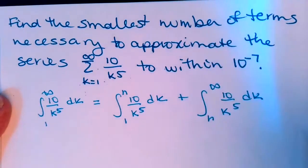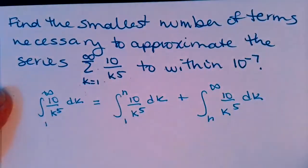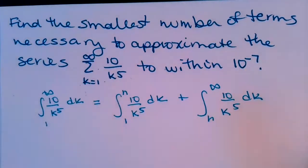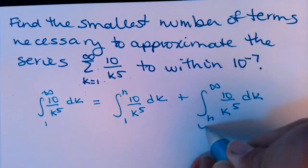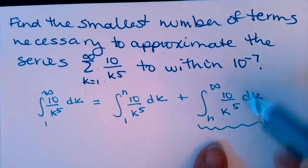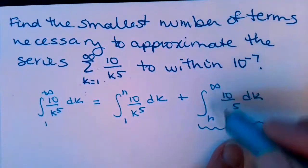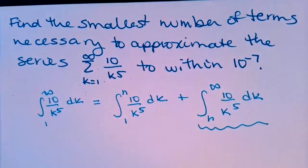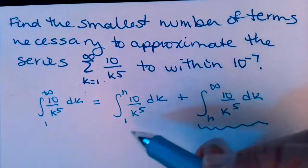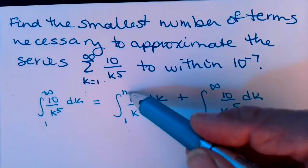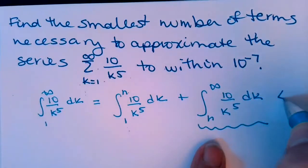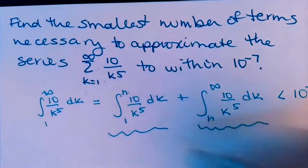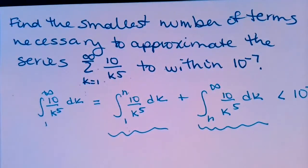I'm just writing that same integrand over and over, using that linearity of integrals. So the idea is this second part, that sum, is the remainder—what we get after we add up the first 1 to n terms. As long as this second integral is less than 10 to the negative 7, we have enough terms for our approximation.